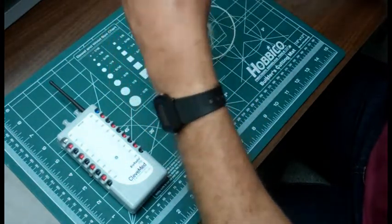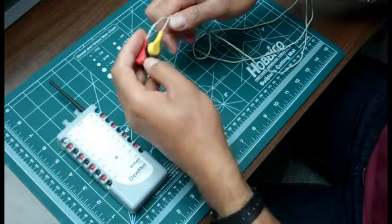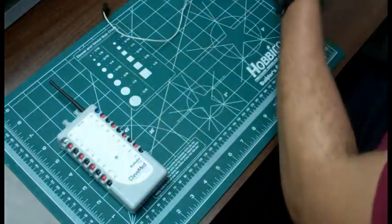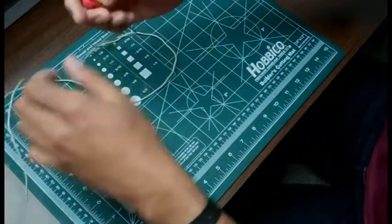We will connect two electrode cables to the two electrodes on the forearm. We will connect the third electrode cable to the third electrode on the elbow.